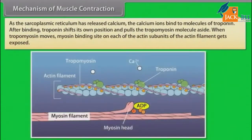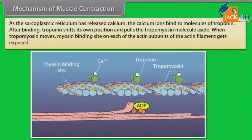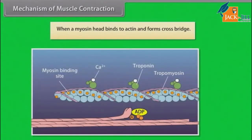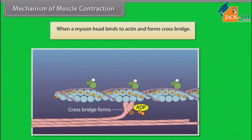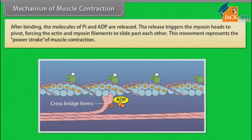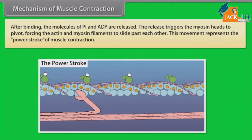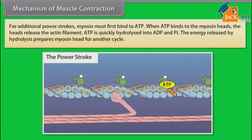As the sarcoplasmic reticulum releases calcium, the calcium ions bind to molecules of troponin. After binding, troponin shifts its own position and pulls the tropomyosin molecule aside. When tropomyosin moves, the myosin binding site on each actin subunit gets exposed. When a myosin head binds to actin, it forms a cross-bridge. After binding, the molecules of Pi and ADP are released. This release triggers the myosin heads to pivot, forcing the actin and myosin filaments to slide past each other. This movement represents the power stroke of muscle contraction.